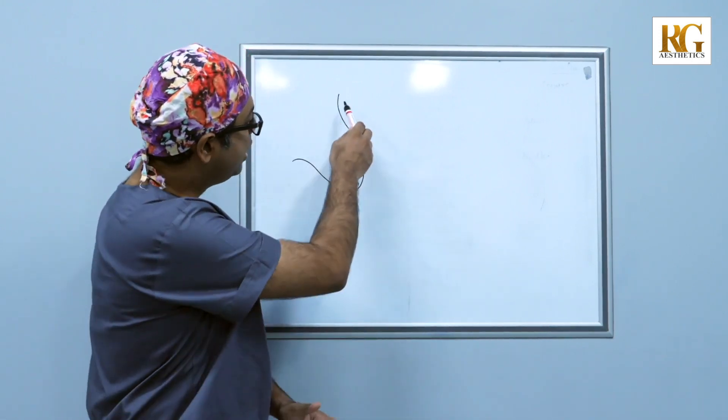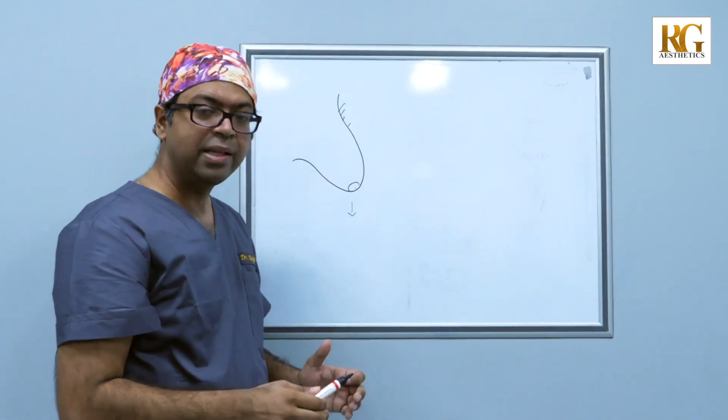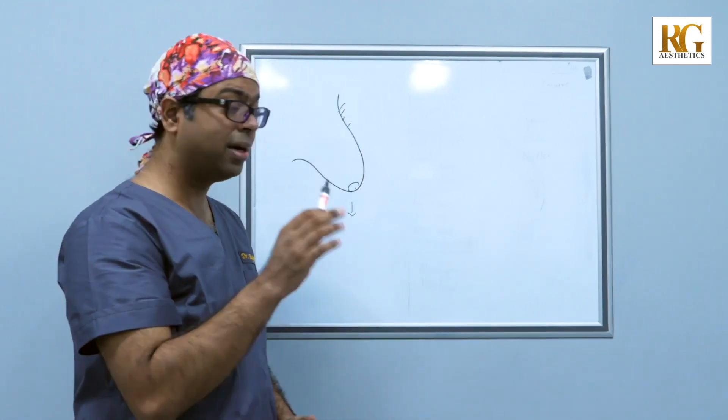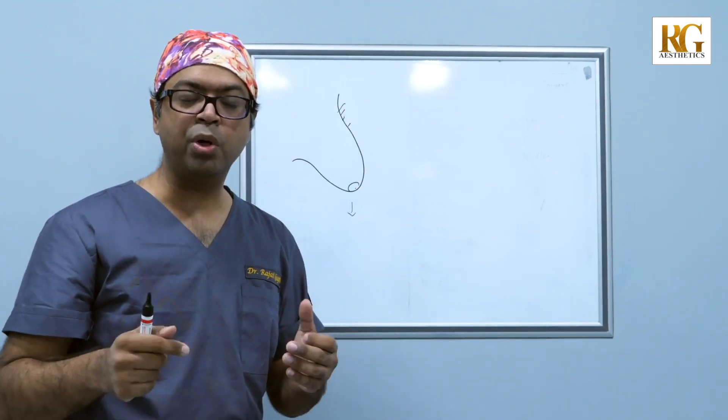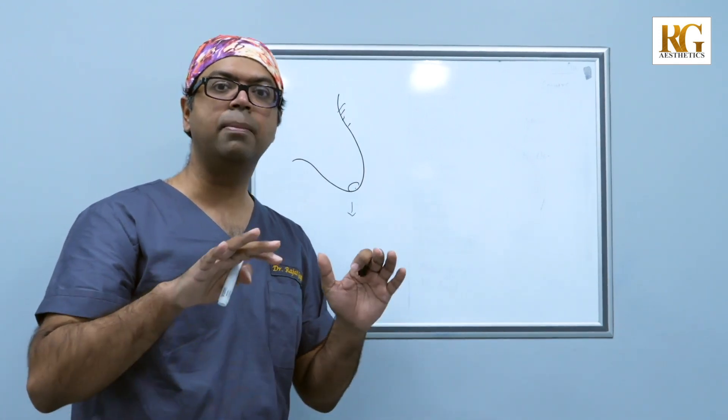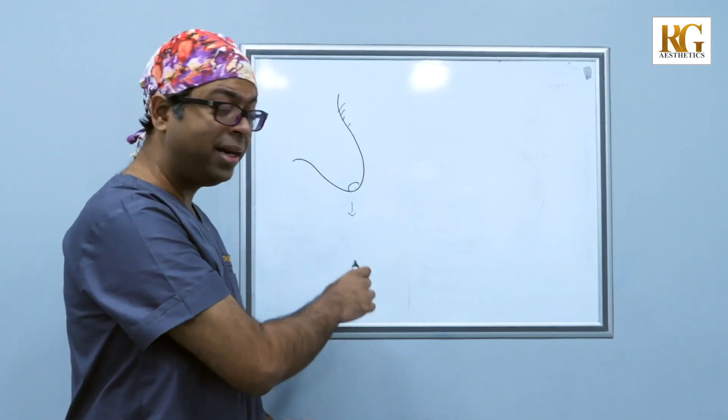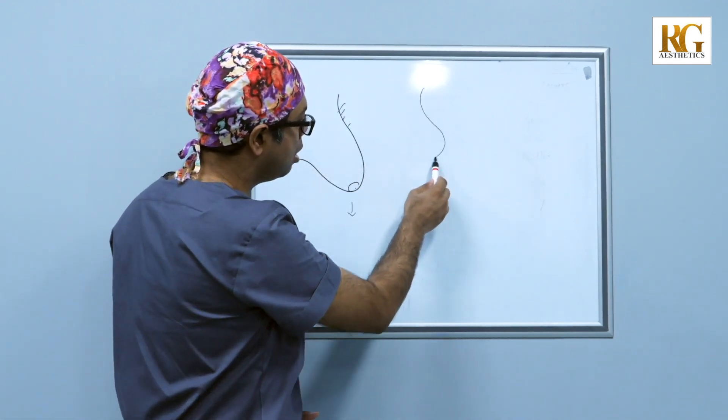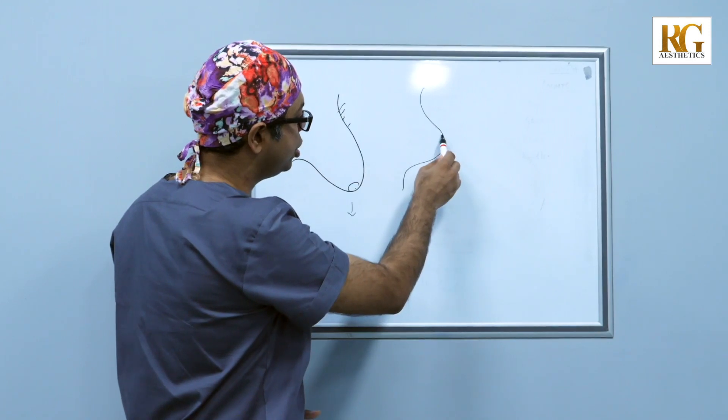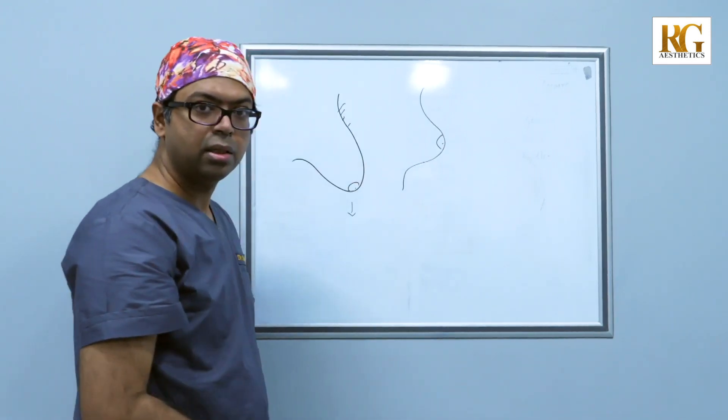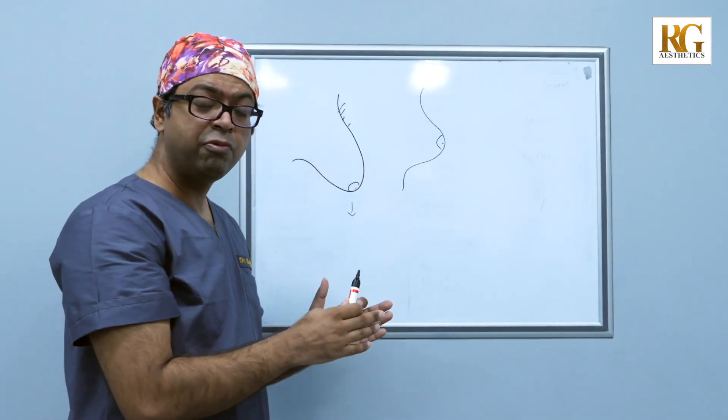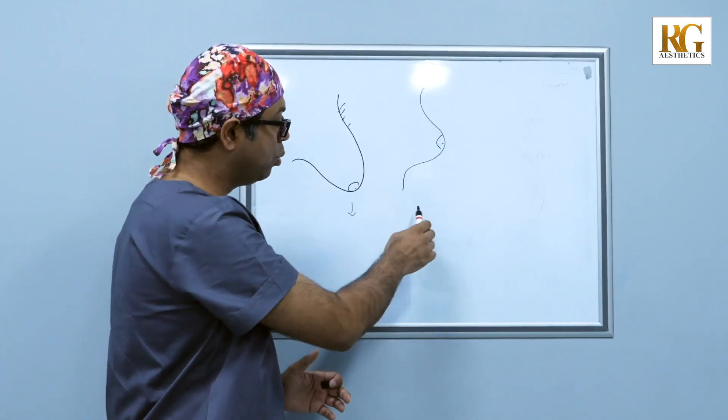But understand, anything which is sagging, if you put more weight to it, it will sag more. So what they need is basically a breast of this shape. So they need a breast which is lifted up and a reasonable volume. So this needs a lift surgery.